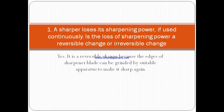A sharpener loses its sharpening power when used continuously. Is the loss of sharpening power a reversible change or an irreversible change? It is a reversible change, because the edges of the sharpener blade can be ground by a suitable apparatus to make it sharp again.